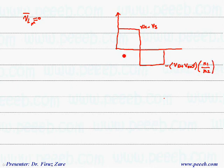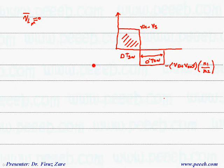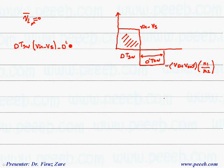The switch-on time is D times TSW, and the switch-off time is D-prime times TSW. So we find each area and add them together: D·TSW times (Vin minus Vs) plus the second area, which is minus D-prime·TSW times (Vd plus Vout) times the turns ratio. This sum should equal zero.